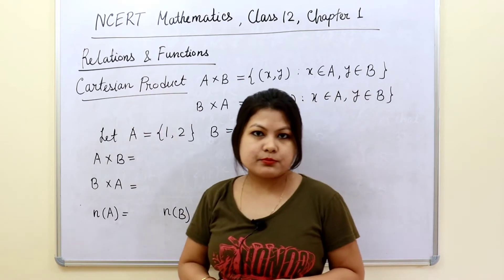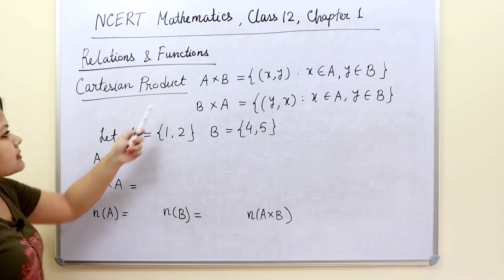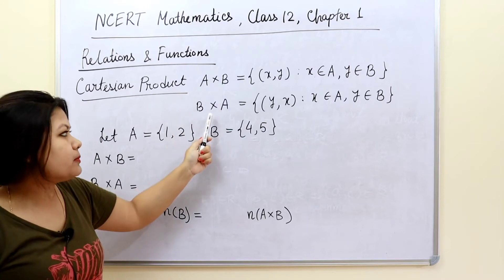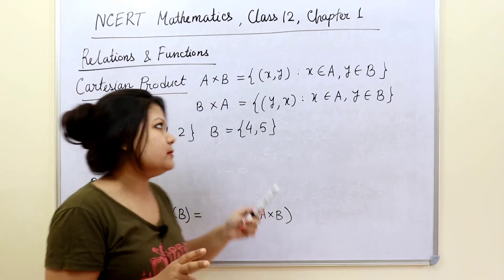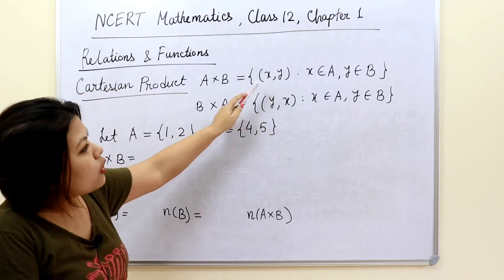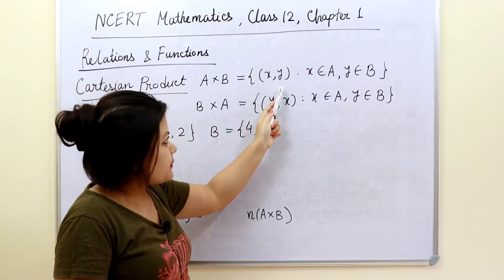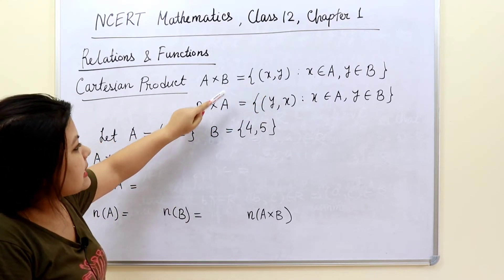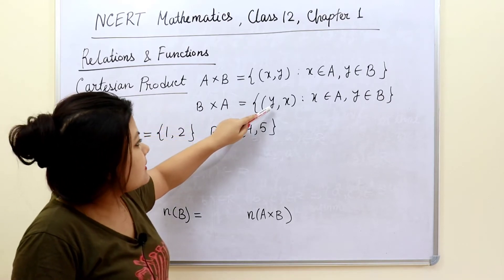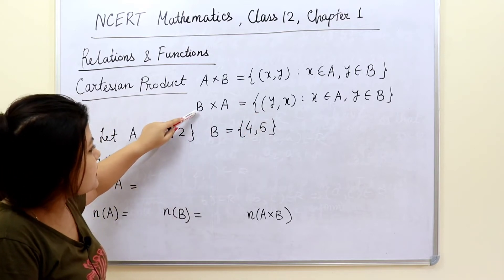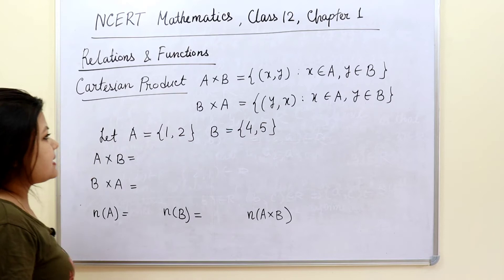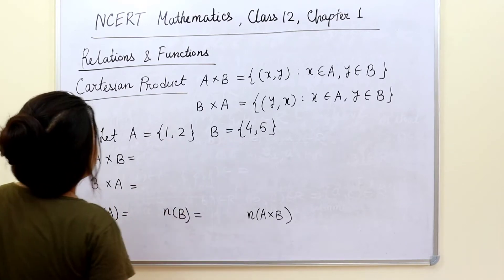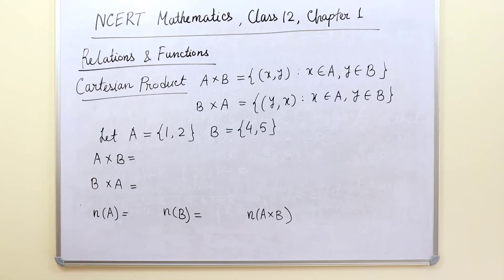First of all, let us discuss about Cartesian product. So what is Cartesian product? Suppose any two sets A and B are given, then we can represent the Cartesian product as A cross B or B cross A. In A cross B, we write the Cartesian product as ordered pairs where the first element is always from set A and the second element is always from set B. Whenever we write B cross A, the first element Y is from set B and X is from set A. Let us take an example where A has elements 1 and 2, and B has elements 4 and 5. Let us write down what is A cross B and B cross A.